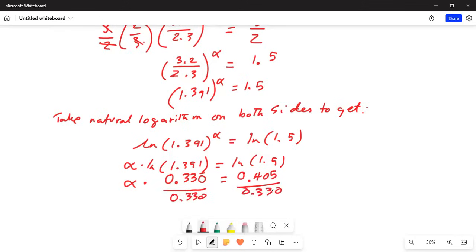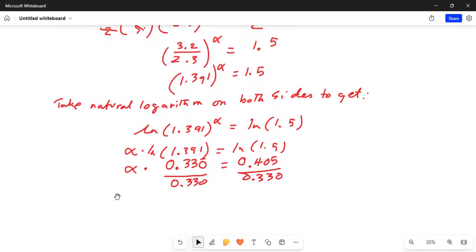Now divide by 0.330 on both sides. On the left hand side 0.330 cancelled on the numerator and the denominator. Alpha equals 0.405 divided by 0.330.